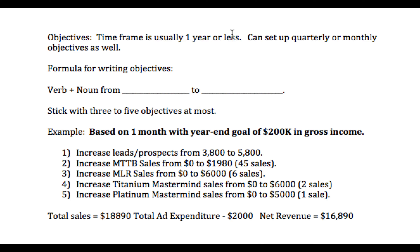Objectives have a time frame of usually one year or less, and you can set up quarterly or monthly objectives as well. There's a formula for writing objectives: it's basically a verb plus a noun, from whatever the number is to whatever number you want it to be. You generally want to stick with about three to five objectives at the most, because you don't want to overdo it.